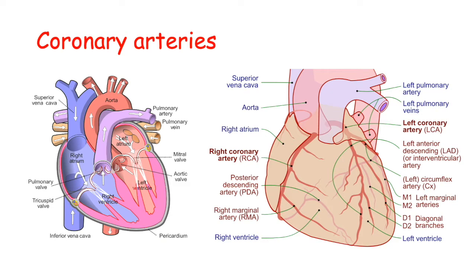As the heart pumps blood out into the body, we have the ascending aorta, then the aortic arch, and then the descending aorta. There are two branches in the ascending aorta: the right coronary artery and the left coronary artery. These two supply the heart muscle — giving that muscle oxygen and nutrients.